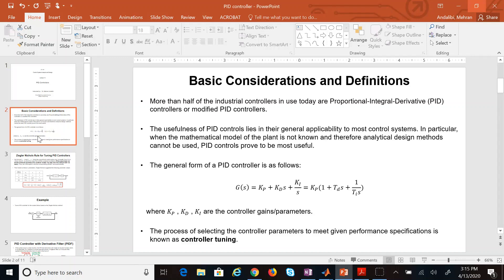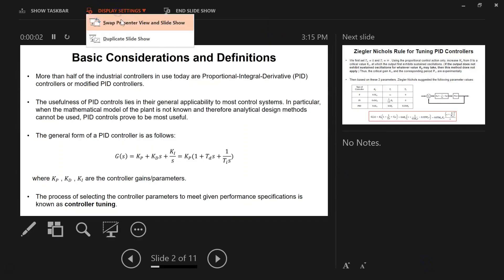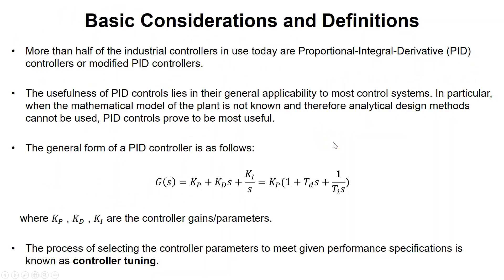One of the things you might want to notice is more than half of the controllers in industry are PID controllers. Although this is quite simple — all you do is take the error signal and magnify it, integrate it, take the derivative of it, add them together, and send it as the control signal to the plant. You might wonder why this simple control law is so popular and used in so many places.